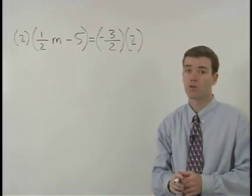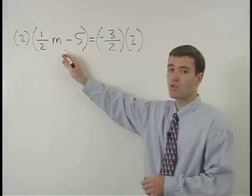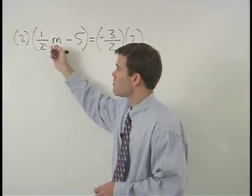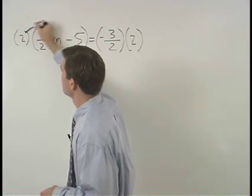Now here's what you have to watch out for. There are two terms on the left side of the equation. So this 2 must distribute through both terms.